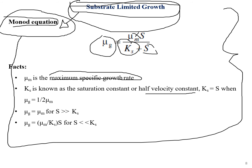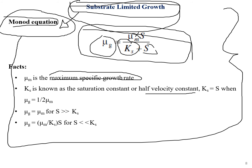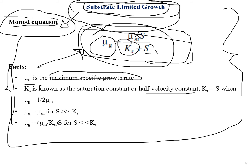Some important facts about the Monod equation: when S = Ks, μg equals half of μm. When substrate S is much greater than Ks (substrate in abundance), μg equals μm and is independent of substrate concentration. When substrate is very low (S ≪ Ks), μg ≈ (μm / Ks) · S. These are the key relationships that describe substrate-limited growth.